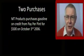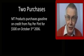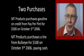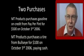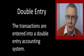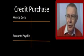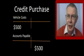MT Products purchases gasoline on credit from Paperpoint for $500 on October 3, 2006. MT Products purchases a tire from Bullseye for $100 paying cash on October 3, 2006. The transactions are entered as double entries. The credit purchase is entered as a debit to vehicle costs for $500 and a credit to accounts payable of $500.